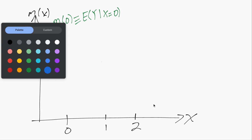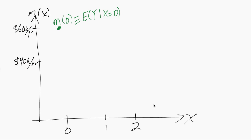And then we can do the same thing for the other values of x. So M(1) is the mean salary among individuals who have one sibling. And for this example, we're just assuming that's $40,000 per year.